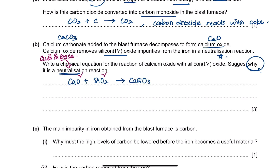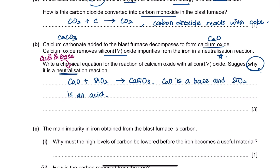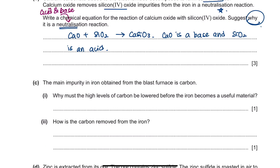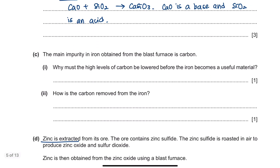Neutralization is a reaction between an acid and a base. In this reaction, calcium oxide is the base and silicon oxide acts as the acid. Since base and acid are reacting together, this is why the reaction is called neutralization.